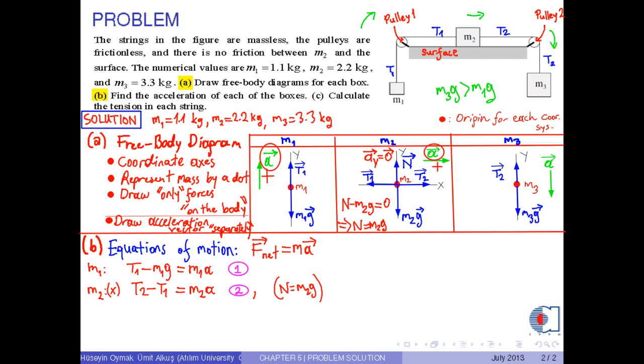Finally, for mass M3, we choose the direction of the acceleration vector as positive. Then, the net force is written to be M3 times G minus T2, which is equal to M3 times A by the Newton's second law.